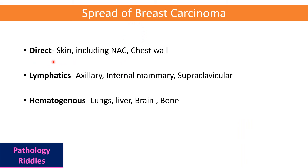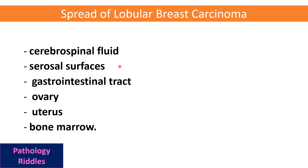Breast carcinoma can spread directly by infiltrating the skin including the nipple-areolar complex and into the chest wall. Through lymphatics it can go to axillary, internal mammary and supraclavicular lymph nodes. Through hematogenous spread it can go to lung, liver, brain, and bone. Lobular carcinoma has a different spread pattern, going to cerebrospinal fluid, serosal surfaces, gastrointestinal tract, ovary, uterus, and bone marrow.